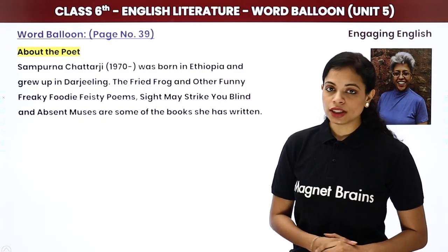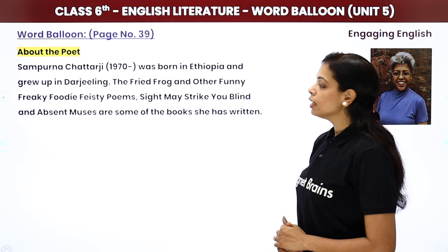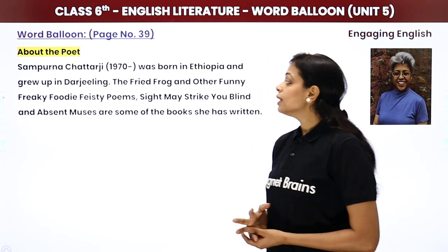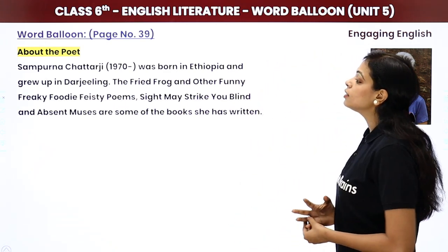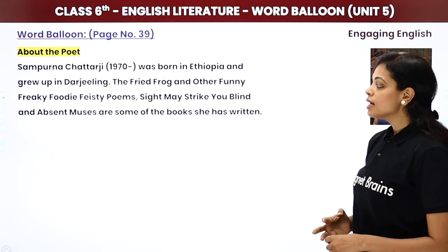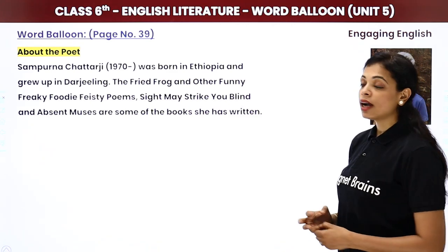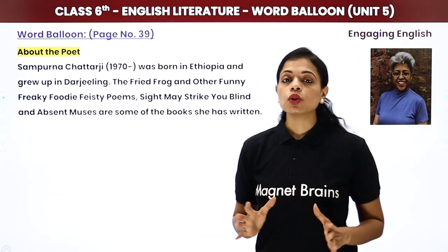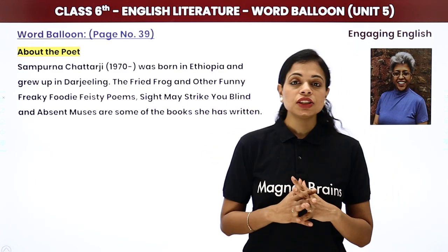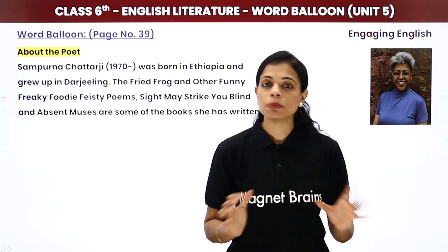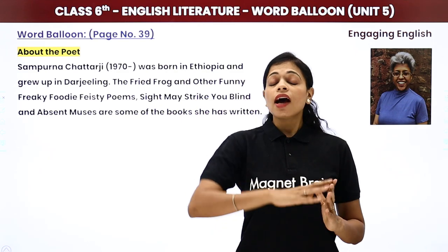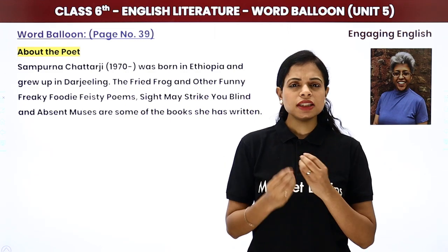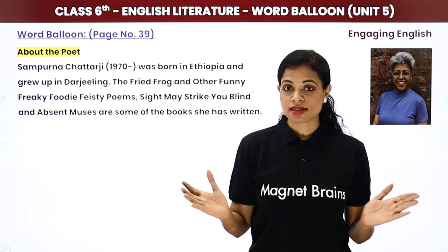Sampoorna Chatterjee is the name of our poet. She was born in Ethiopia and grew up in Darjeeling. Some of her books include 'The Fried Frog and Other Funny, Freaky, Foodie, Feisty Poems,' 'Sight May Strike You Blind,' and 'Absent Muses.' She is highly imaginative — when you read this poem, you will feel how much imagination can be created from a small thing.